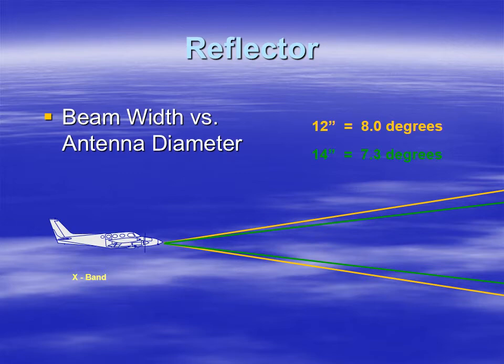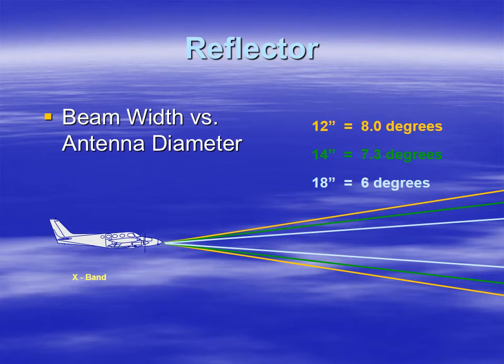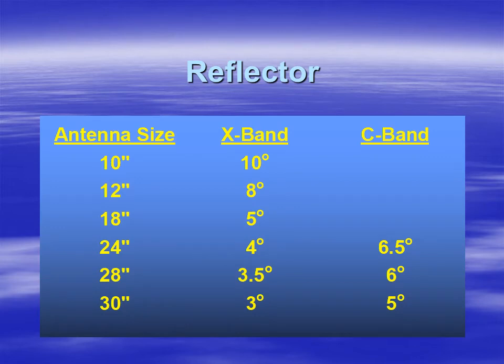Going with a larger antenna or dish gives a smaller beam. With 14 inches you get 7.3 degrees, and increasing to 18 inches gets it down to a six degree beam. Here are antenna sizes in inches — these are diameters of the dish — for different bands. Most weather radars use X-band, but there are some C-band airborne weather radars. For a large aircraft with a large nose cone, typically they use a 30-inch dish, which gets it down to a three degree beam for X-band or a five degree beam for C-band. The longer the wavelength, the bigger the beam for a particular dish size.